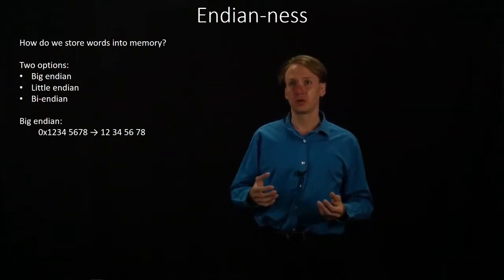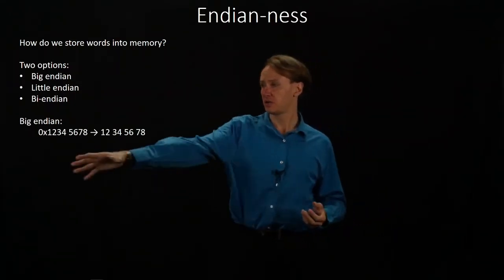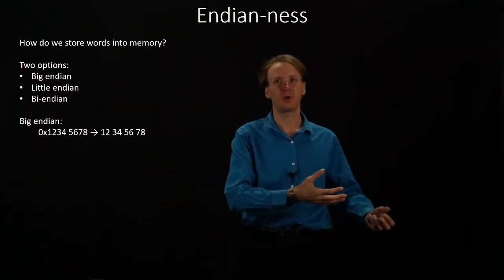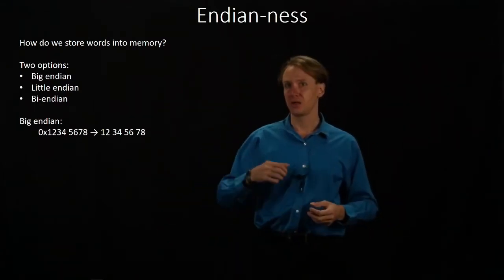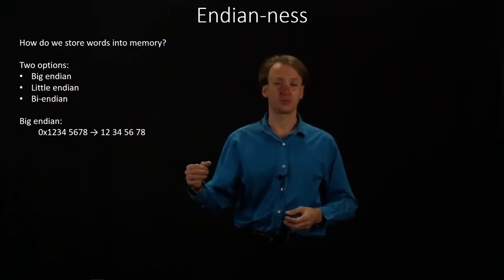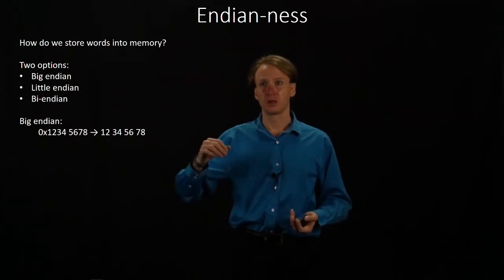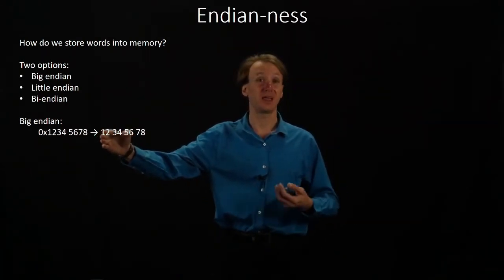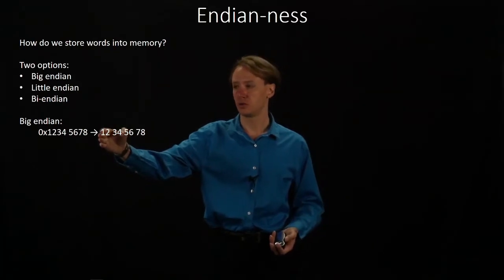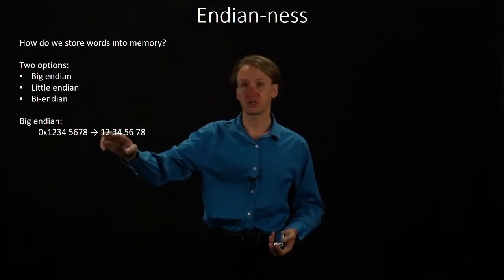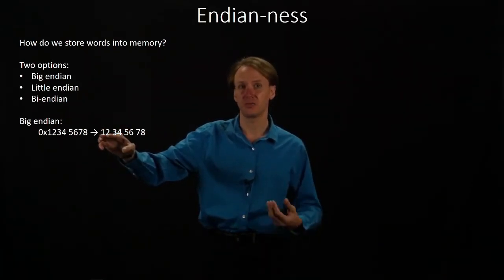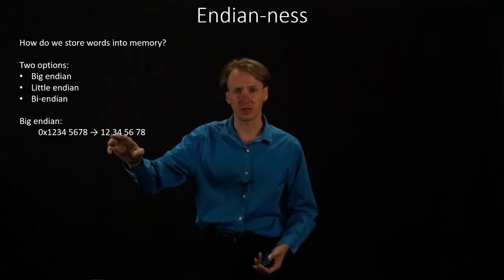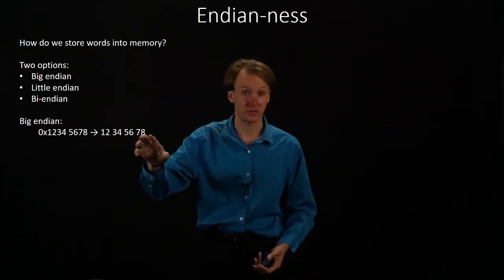In a Big Endian system, if I take my 32 bits from a word and I want to store them into memory, they're going to look like this when I look at them in memory. My address points to the Big Endian system, so the first thing that I put in is the most significant byte of my number, then the second most significant byte, then the third, then the least significant byte.